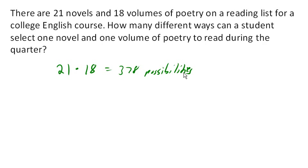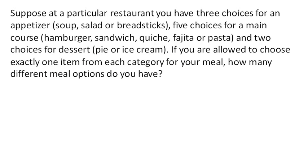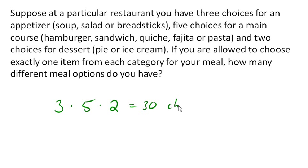Now suppose that we're at a restaurant and we have three choices for the appetizer, five choices for a main course, and two choices for dessert. If we're allowed to choose exactly one of each, then we would have 3 times 5 times 2 equals 30 choices. It is important to note that this assumes we actually pick one from each category.